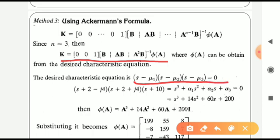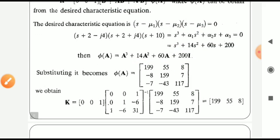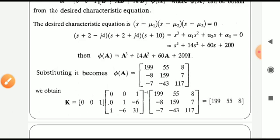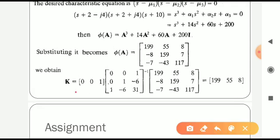Expanding the desired characteristic equation gives s³ plus 14s² plus 60s plus 200 equal to zero. Replacing s by capital A, the system matrix, we obtain phi of A equal to A³ plus 14A² plus 60A plus 200I. By finding those values and substituting into Ackermann's formula, we obtain K equal to [199, 55, 8] — the same answer as in all three methods.